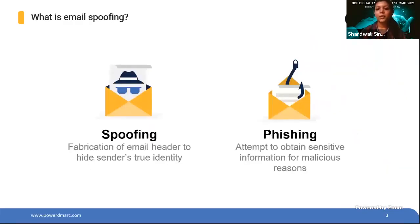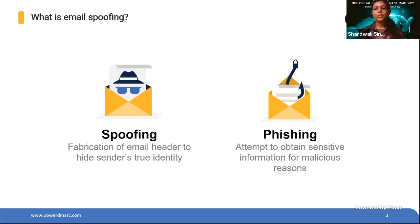Just to brief you a little bit about the terminology, because we'll be using these terms later in the slides. Email spoofing is the creation of email messages with a forged sender address — a technique used mostly for spamming or tracking users. Email phishing is a fraudulent attempt to obtain sensitive information such as usernames, passwords, credit card numbers, or other sensitive details by impersonating a legitimate entity.